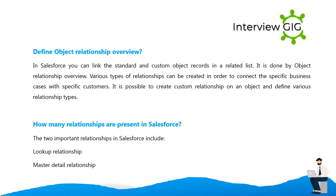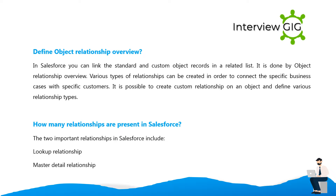Define object relationship overview. In Salesforce, you can link standard and custom object records in a related list using object relationship overview. Various types of relationships can be created to connect specific business cases with specific customers. It is possible to create custom relationships on an object and define various relationship types. The two important relationships in Salesforce include lookup relationship and master-detail relationship.